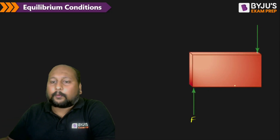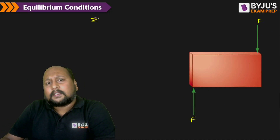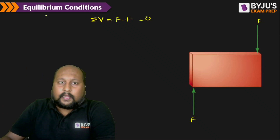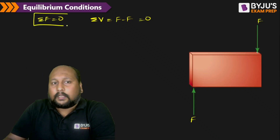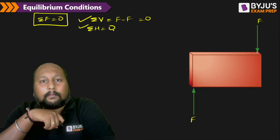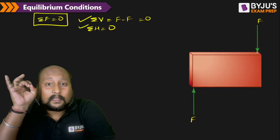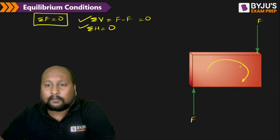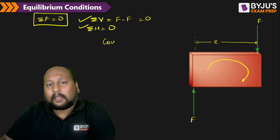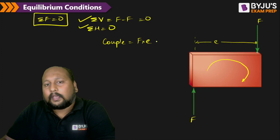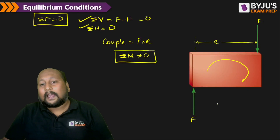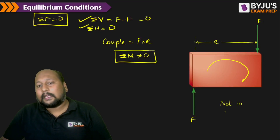Now consider equal and opposite forces acting at different points. The total vertical force is F minus F, which equals zero. But is the body in equilibrium? No. There is a couple being created. If the distance between the lines of action of the forces is e, the couple equals F times e, meaning the moment is not equal to zero. Therefore, the body is not in equilibrium.